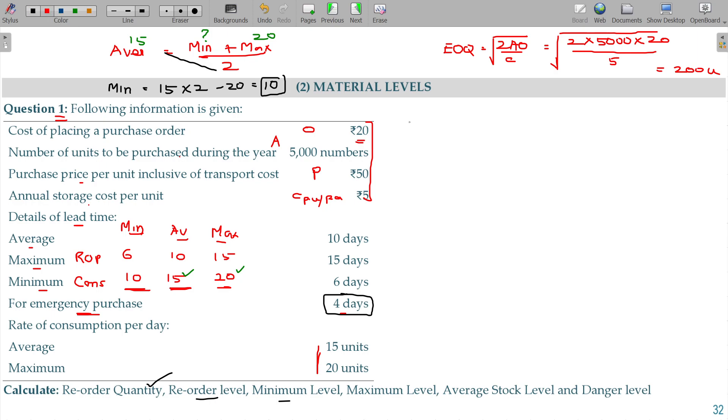Let us see here. Reorder level, ROL, is equivalent to maximum consumption into maximum reorder period. If you multiply this, this is the reorder level. And from here if you subtract this you will get minimum level. From this add reorder quantity and subtract this one to get the maximum level. Formula: maximum consumption 20, maximum reorder period 15, so the ultimate value being 300 units.